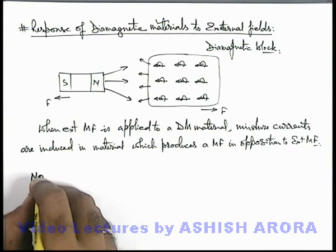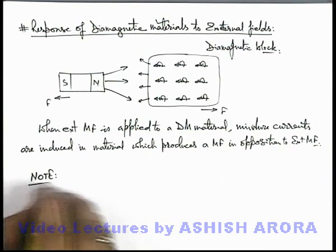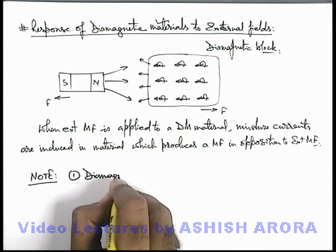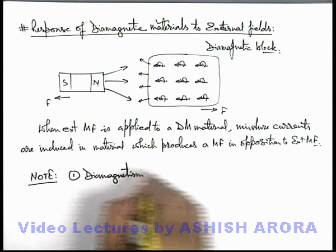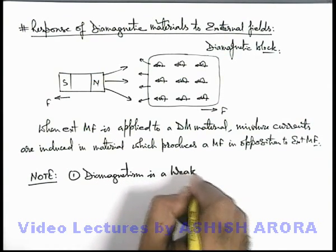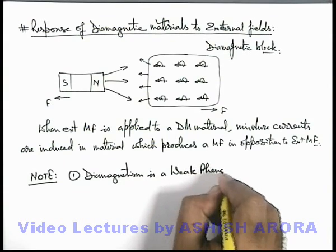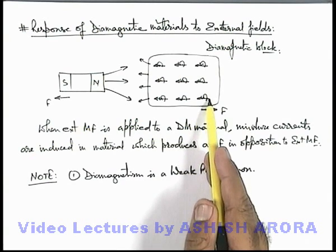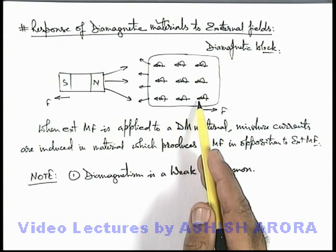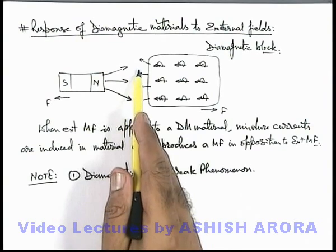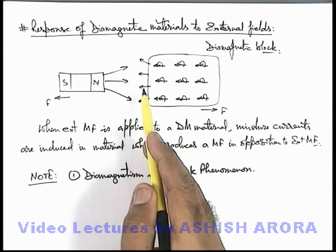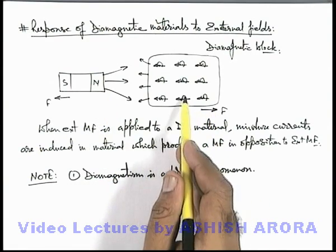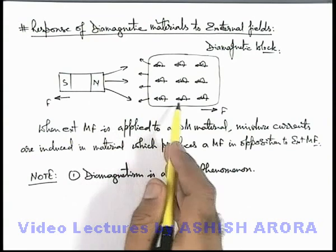Now we can write down some important notes about the phenomena of diamagnetism. The very first point is: diamagnetism is a weak phenomena. That means due to the lattice structure, whichever dipole moments are induced in the material are not very strong, so the magnetic field produced by the block is relatively very small compared to the external field, and the force experienced by the diamagnetic material and the external magnet are relatively small.